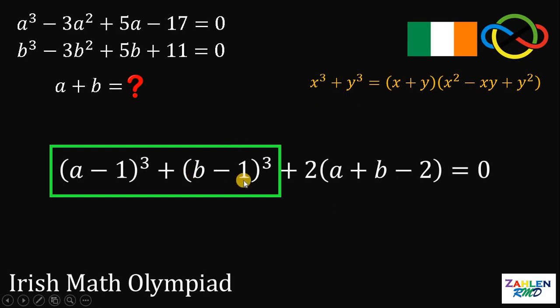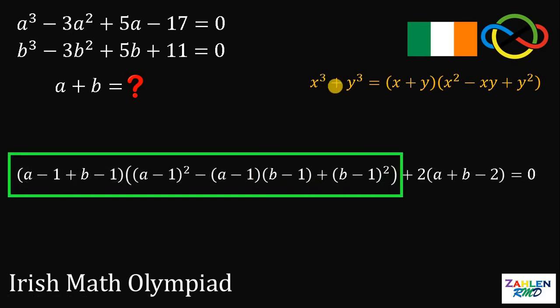Therefore, if we factor these two terms, this will give us... Again, X is just A minus 1 and Y represents B minus 1. So this will give us A minus 1 plus B minus 1 multiply by A minus 1 squared minus A minus 1 times B minus 1 plus B minus 1 quantity squared.